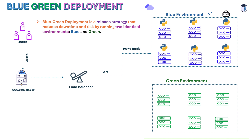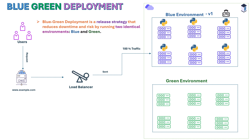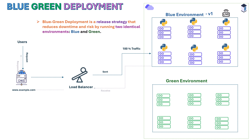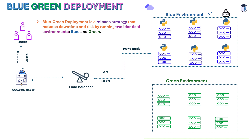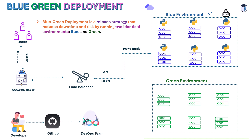These requests will reach the DNS, then the DNS will forward them to the load balancer. The load balancer then routes 100% of the traffic to the blue environment, to multiple servers, where those servers handle the load and send back responses to the users. Let's see how we deploy to the green environment.